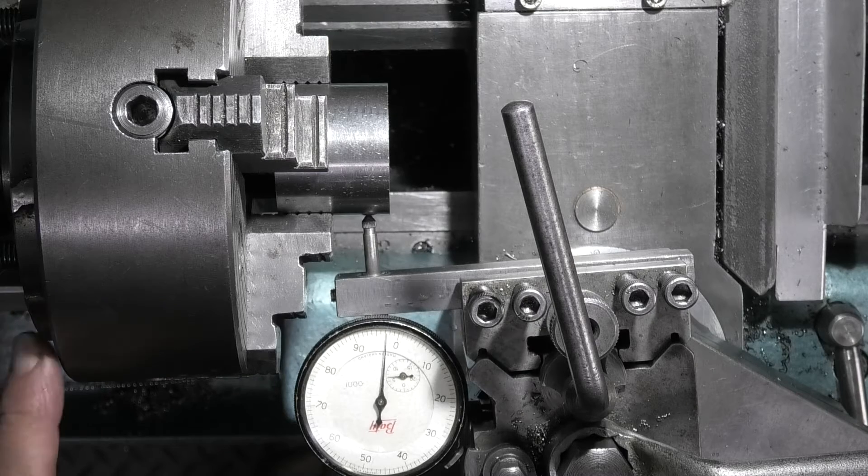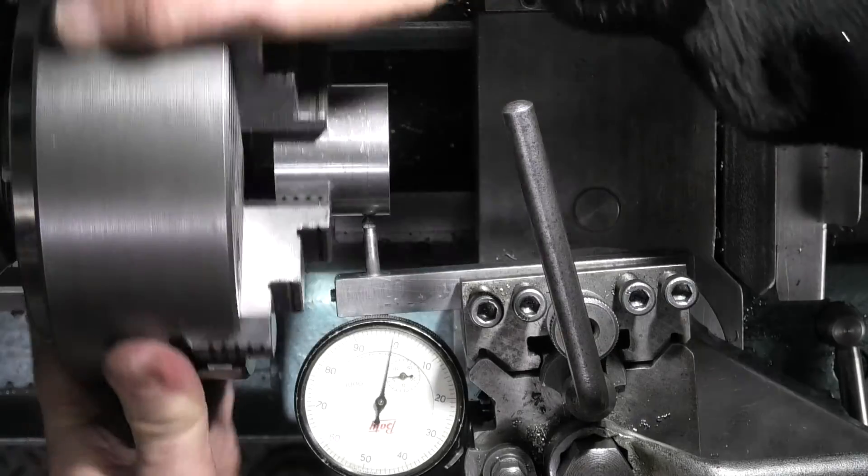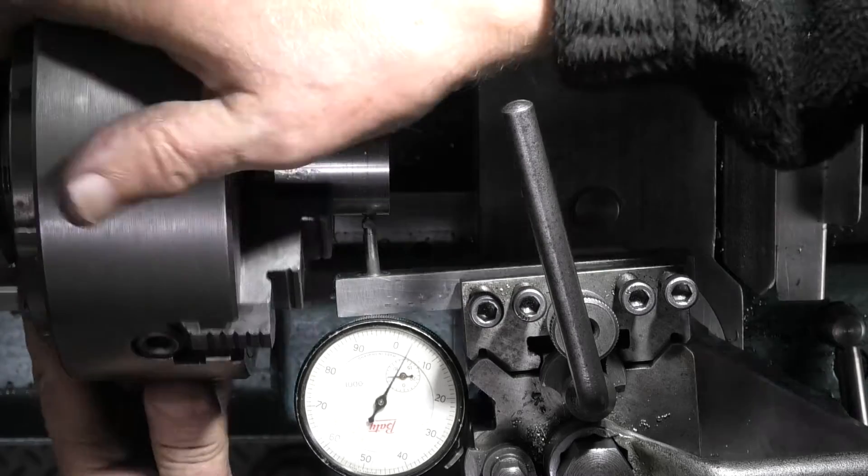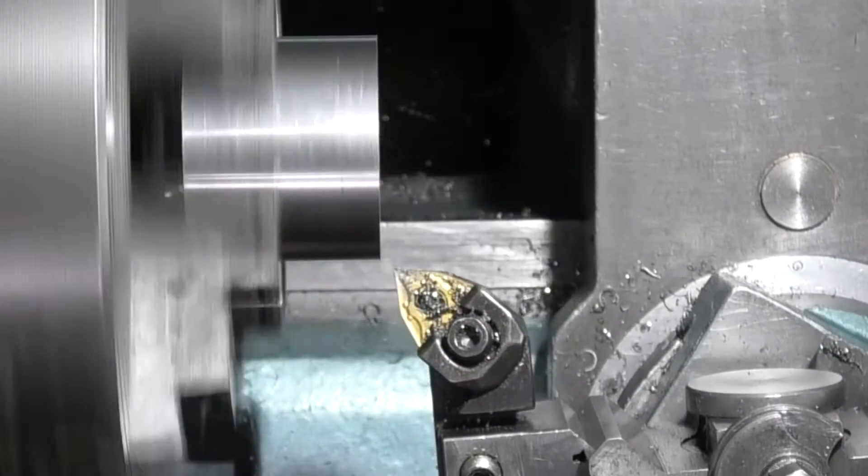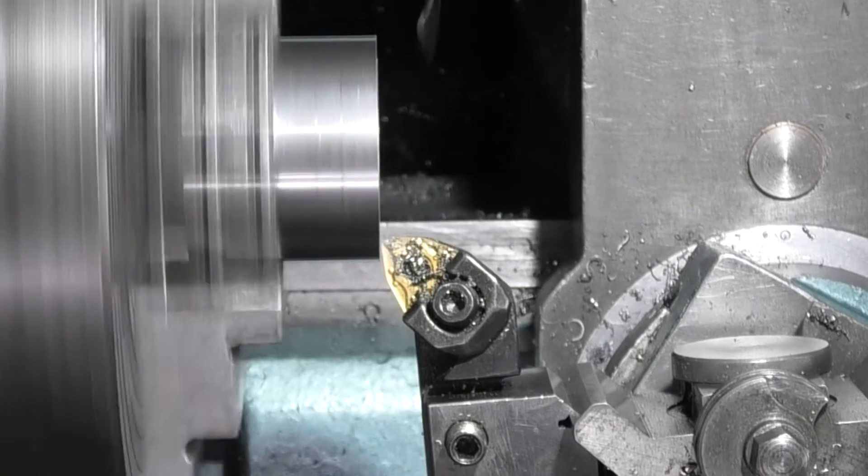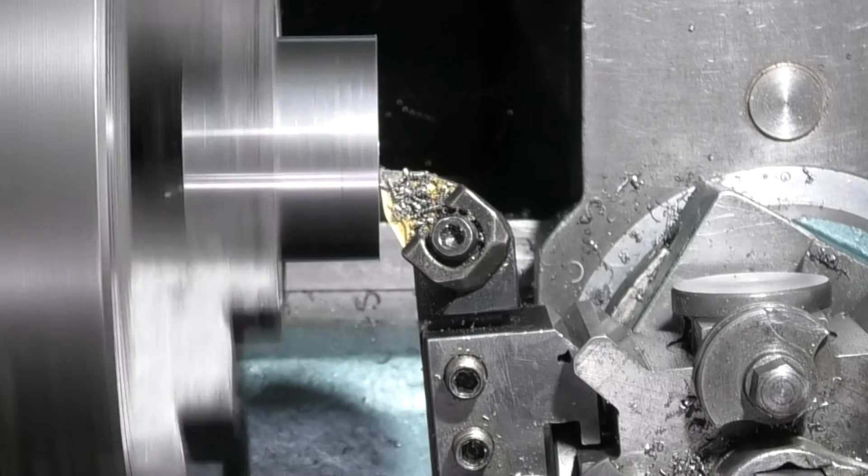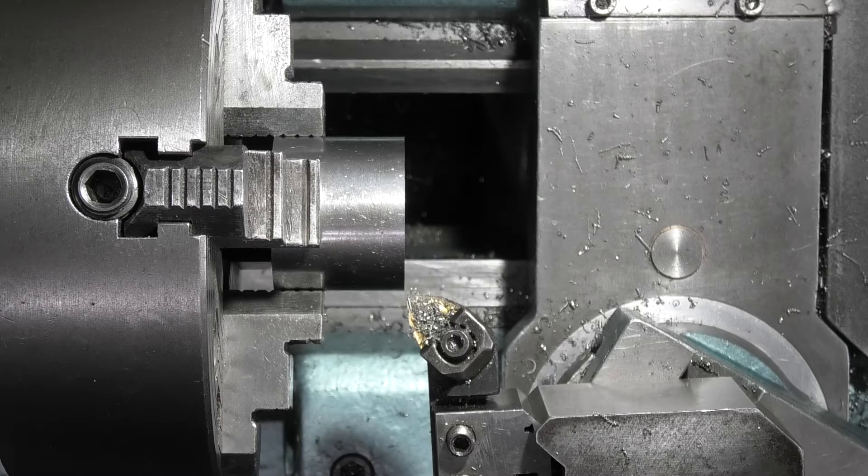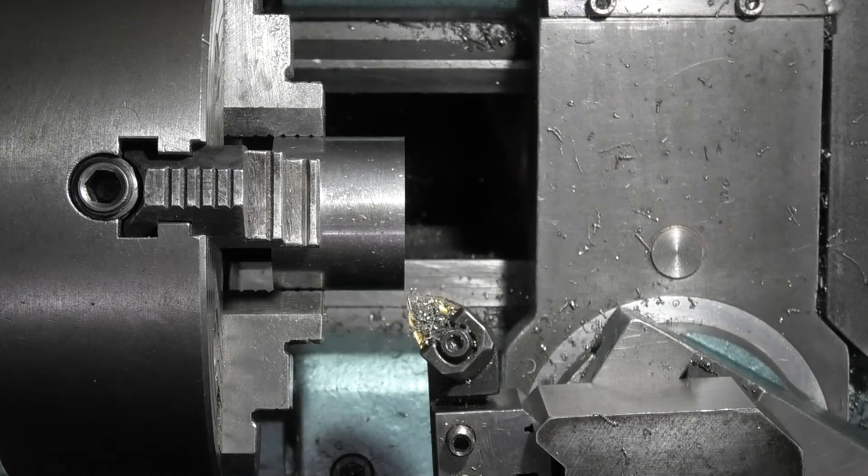I've just placed the blank in the four jaw chuck and I've just set it up so it's running true. That's running about a thou, each 10 marks is a thou. I'll have to check my dies first before I bore the finished size, and I'll turn this diameter down just to give me a concentric diameter.